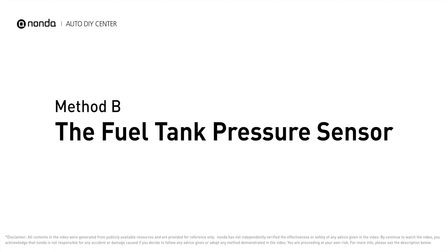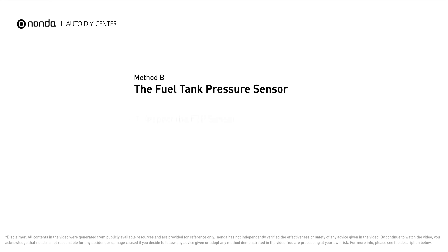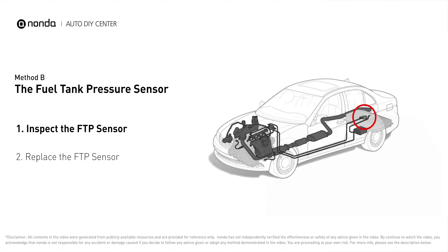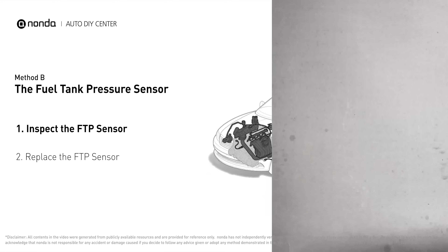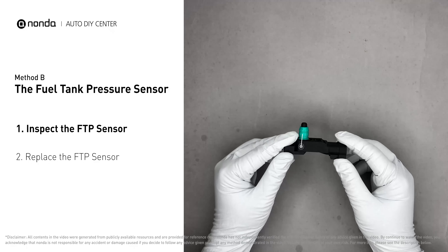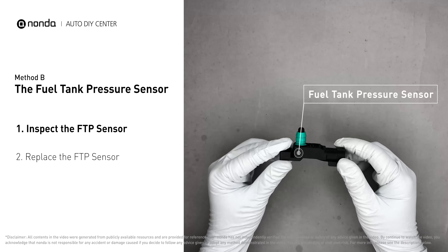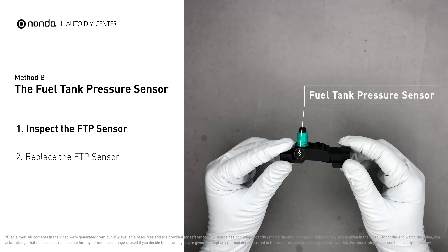Method B: the fuel tank pressure sensor. The fuel tank pressure sensor is part of the fuel pump assembly and is usually mounted on top of the tank. Carefully remove the fuel tank pressure sensor from the fuel tank, then check the seal and the electrical connection for any damages.